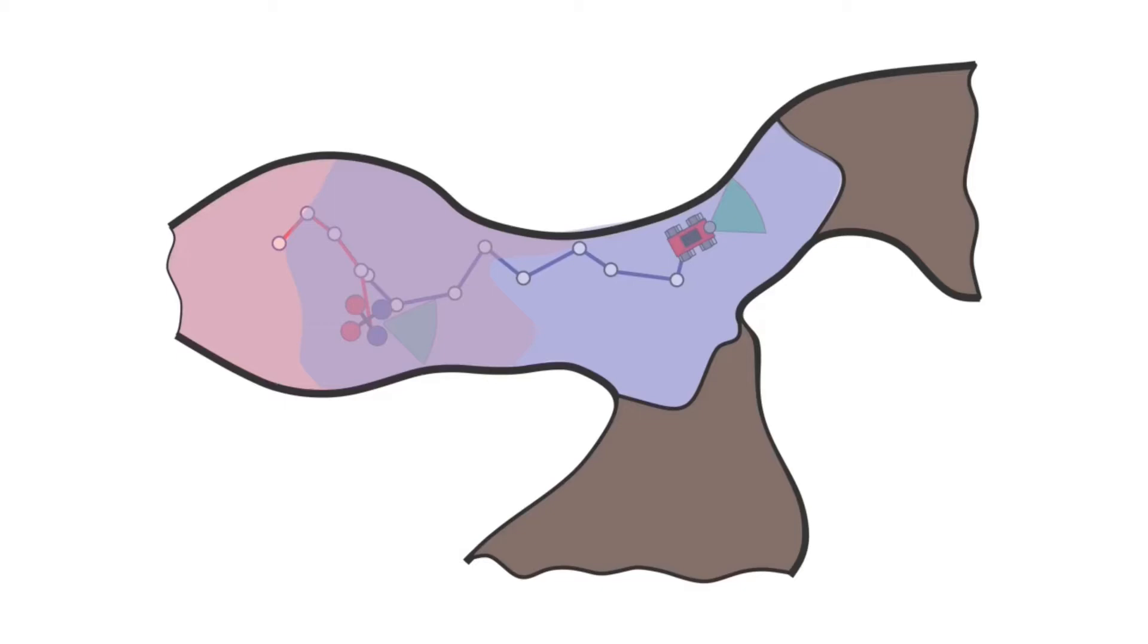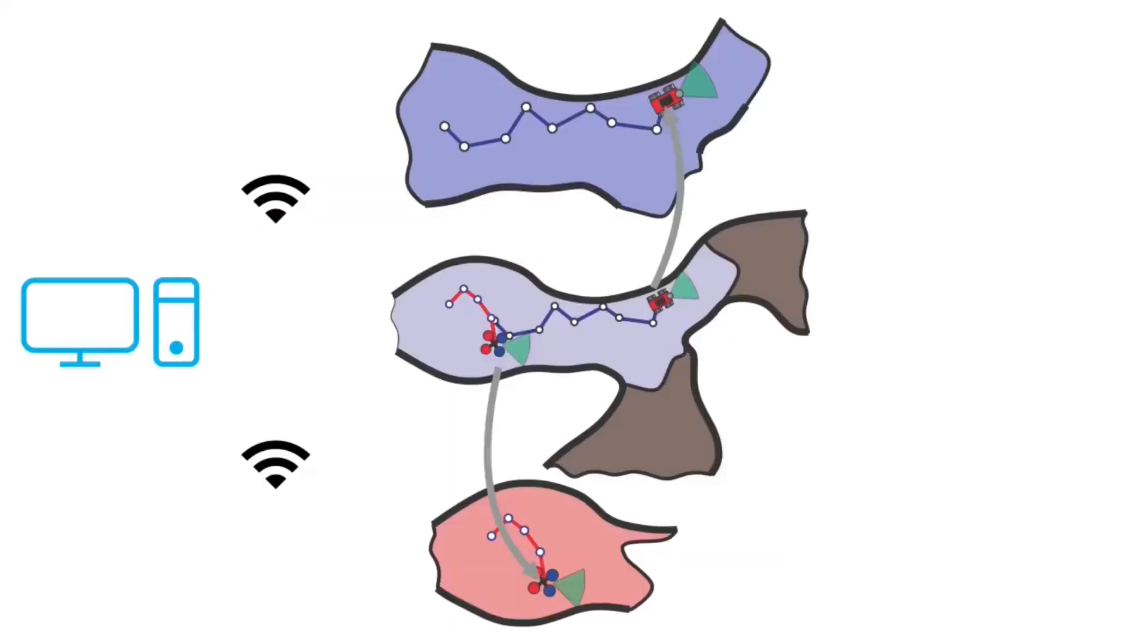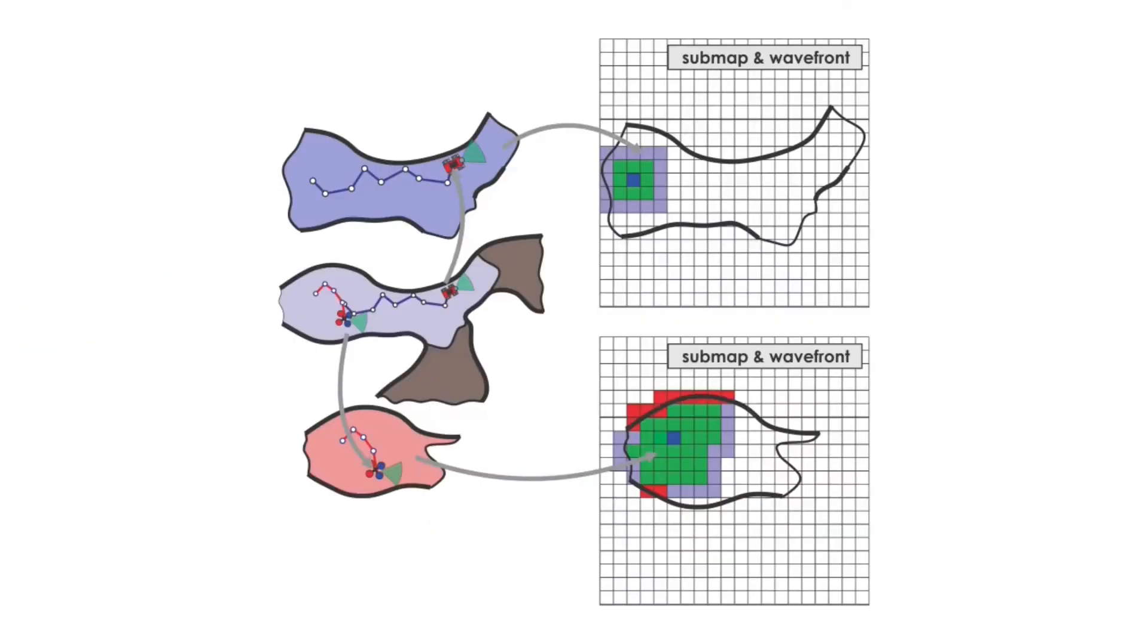At any time, each robot builds a local submap of its surroundings. Each submap is built and maintained by each robot locally, and further shared to a central computational hub for its merging and alignment. Importantly, a volumetric occupancy map representation of the submap is available to enable planning tasks.